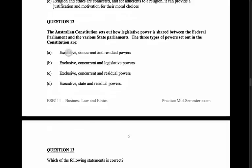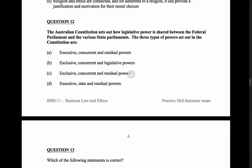Option A: executive, concurrent, and residual - incorrect, no such thing as executive powers in that context. Option B: exclusive, concurrent, and legislative - no, that's not the three. Option C: exclusive, concurrent, and residual powers - yes, I think it's that one. Option D: executive, state, and residual powers - no, that's incorrect. So our answer is C.